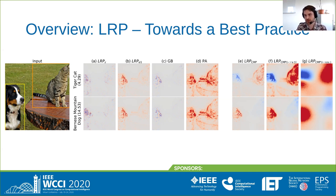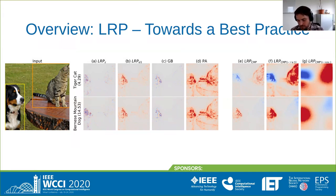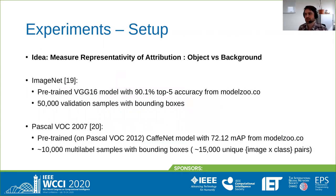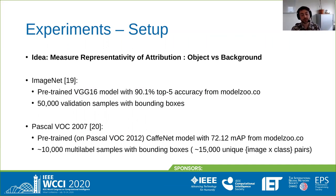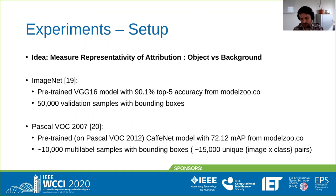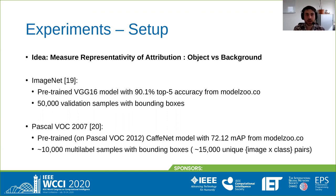Only the outputs of composite LRP show clear class discriminative activity. While those heat maps certainly look nicer and more intuitive, we need to make sure they are actually more representative of what the model is doing. For that we use the ImageNet dataset with about 15,000 samples with bounding box annotations and the Pascal VOC 2007 dataset with about 15,000 unique image-to-class bounding box annotation pairs. The idea is to measure the attribution score landing inside the bounding box, but first we must verify that the model actually uses the object and not the background for prediction.